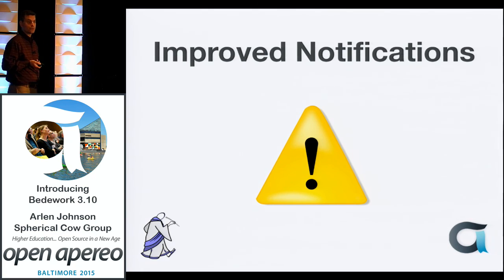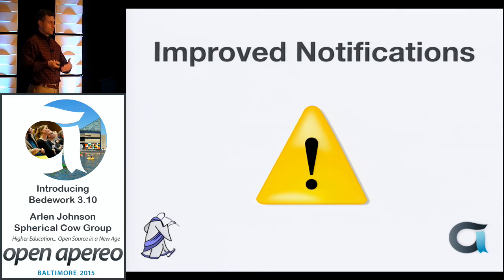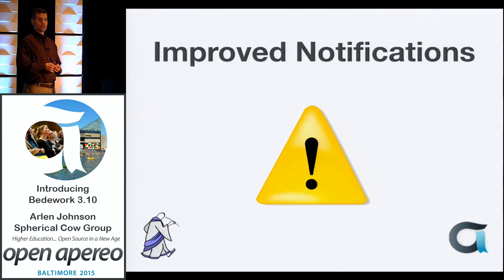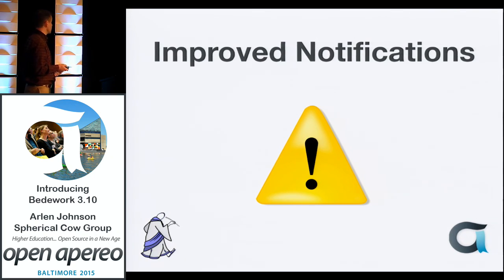Speaking of notifications, we're looking to improve the way they work. They work quite well on mobile devices. The web client notifications appear when someone wants to share a calendar with you or when someone's trying to schedule with you — they show up on the right-hand side in a Facebook-like format, though it's pretty rudimentary right now. We expect improvements over the next few months.